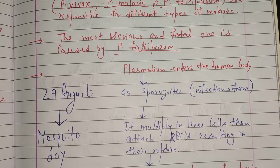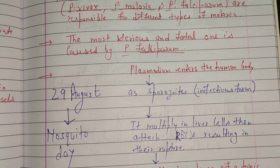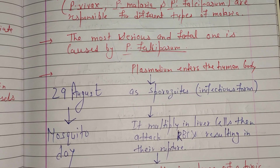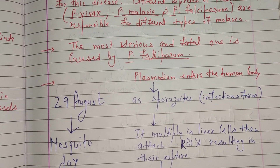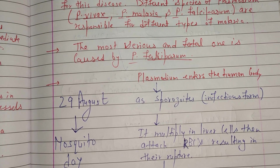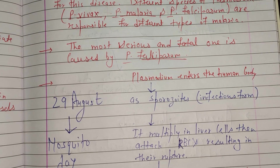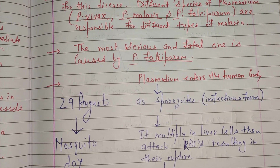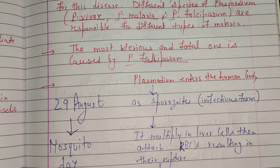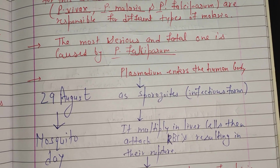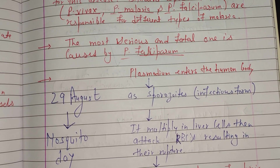Now we will discuss the life cycle of malaria. Plasmodium enters the human body through the bite of an infected female Anopheles mosquito, which is the vector — the transmitting agent. The female Anopheles is the vector, and humans are the primary host. The Plasmodium first travels into the liver after entering the human body.